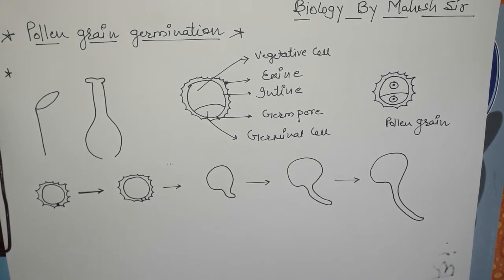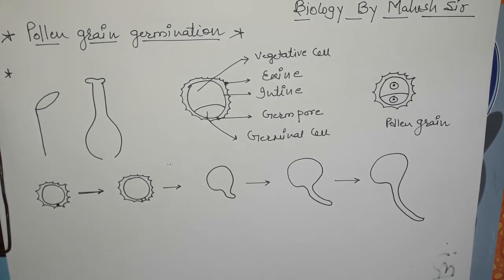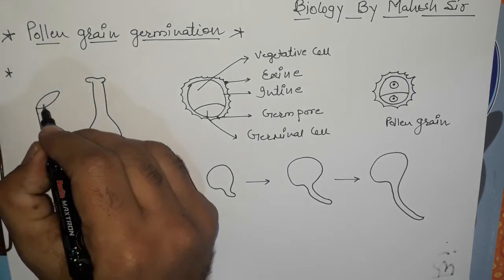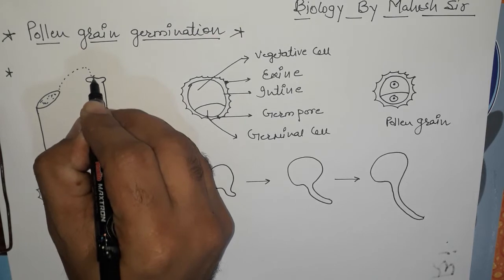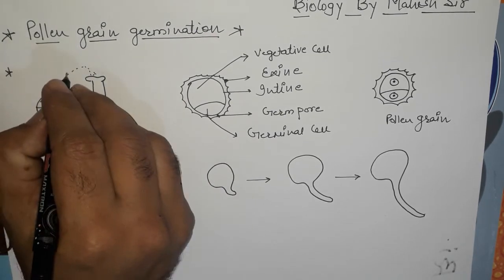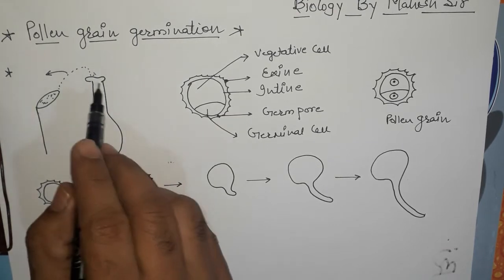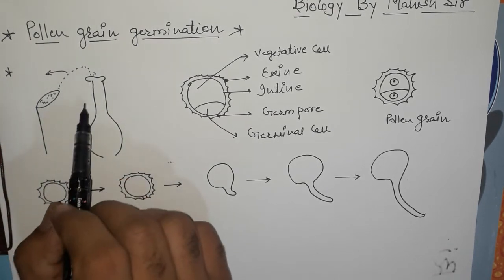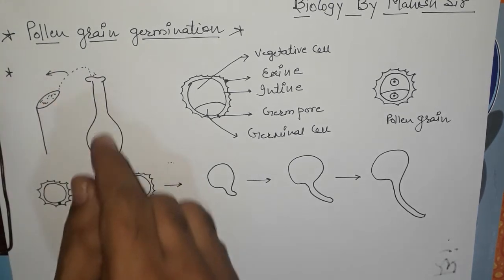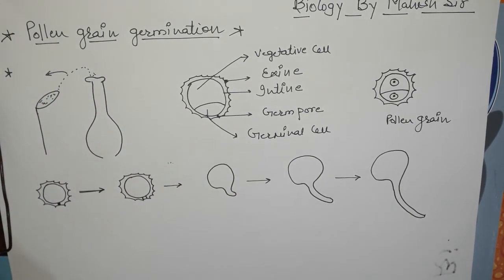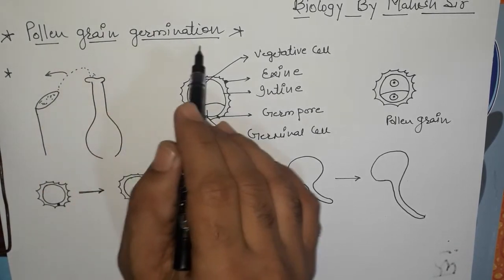Welcome students. In our next series of Biology by Mahesar for 12 science, today we will take pollen grain germination. The process by which the pollen grain lands on a stigma is called pollination. After the landing of pollen grain on the stigma, they germinate and develop a structure so that they can release their two male gametes into the embryo sac. This process is called pollen grain germination.